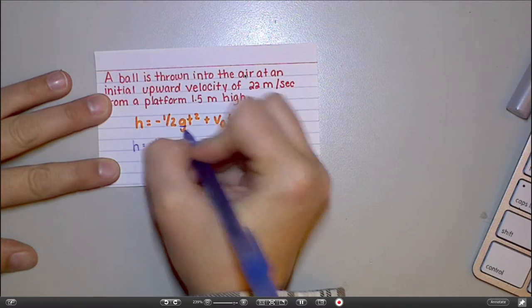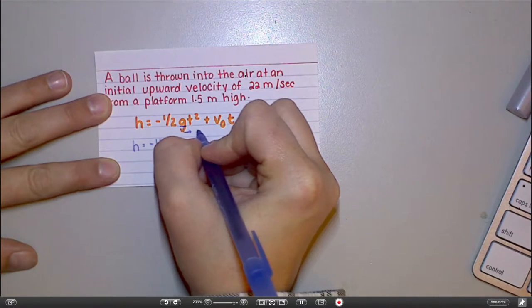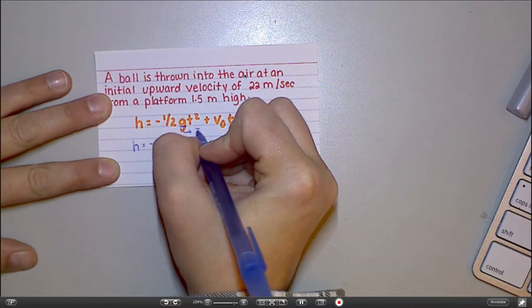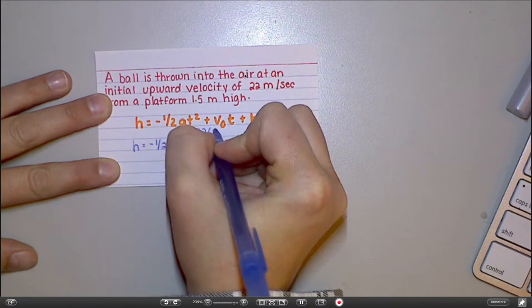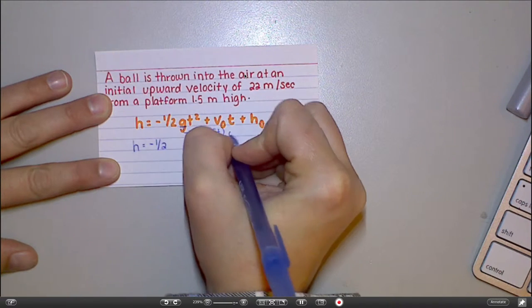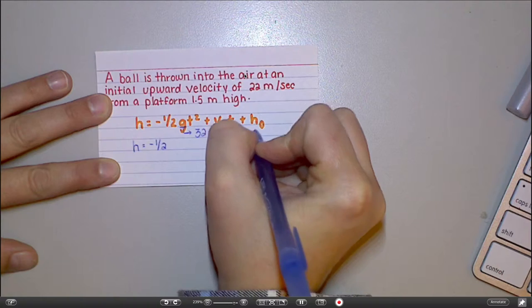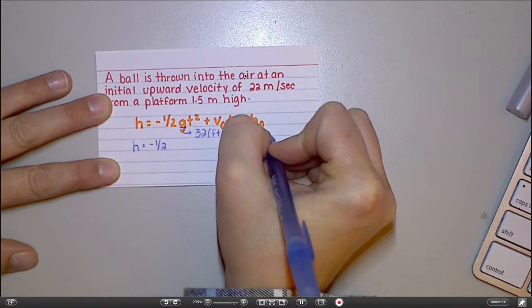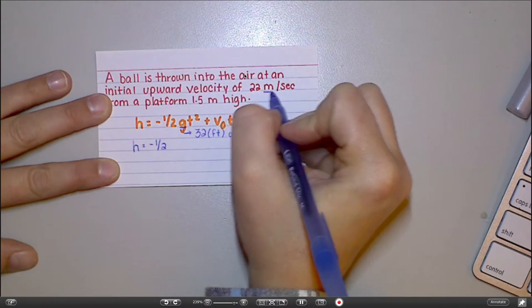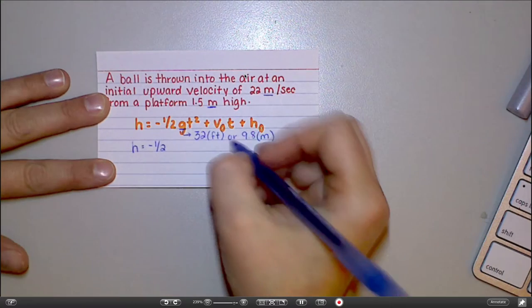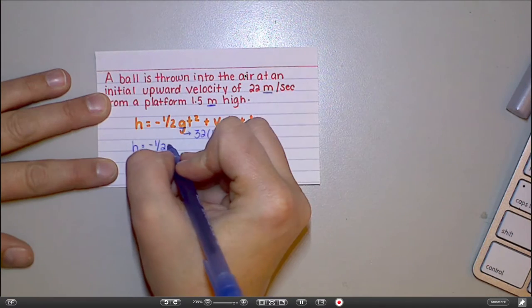Now for g, remember g is always going to be one of two numbers. It's either going to be 32 if you're measuring in feet or 9.8 if you're measuring in meters. So in this problem, I am measuring in meters. Both of my measurements given are in meters. So I'm going to use 9.8 for my g value.